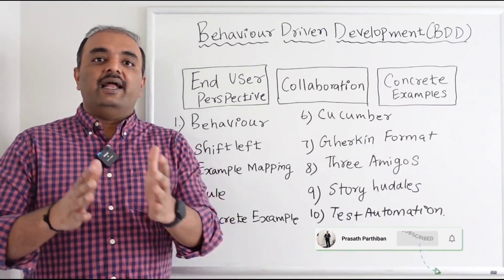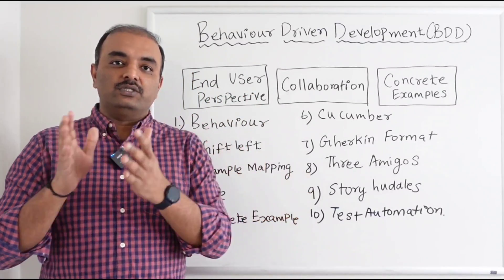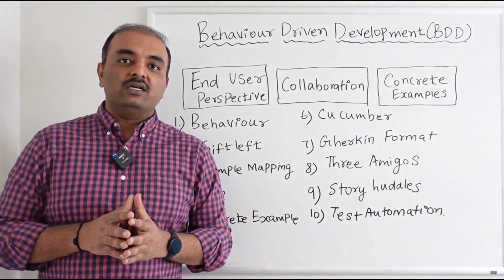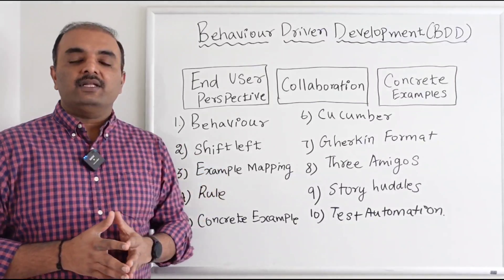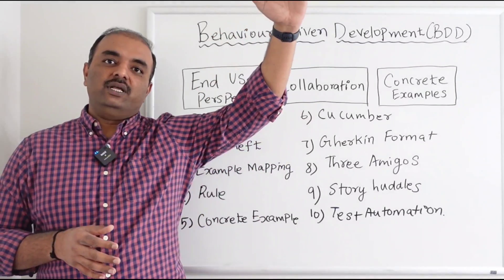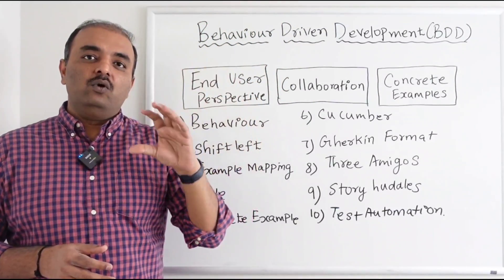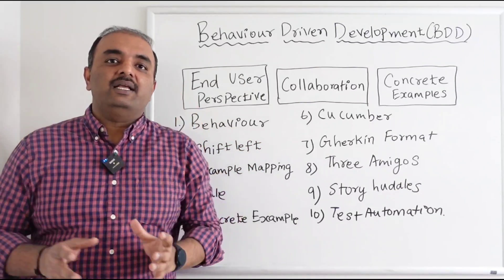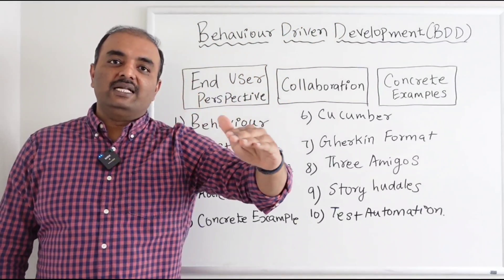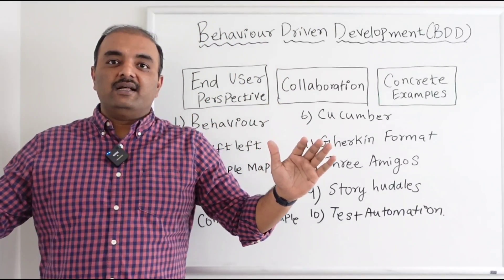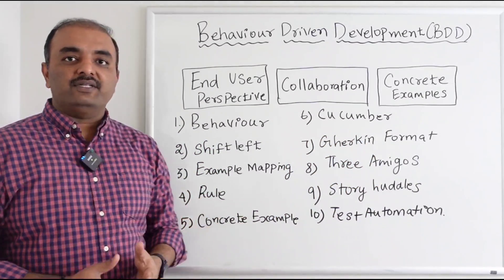With Shift Left, we write the test cases first and then do code changes based on those test cases, so there is no ambiguity. Example Mapping is where we identify the user story, from the user story we identify the rule, and from the rule we identify the examples. It's like story mapping, but here it's example mapping — from the requirement we identify the rule, and from the rule we identify concrete examples that are further defined in Gherkin format.